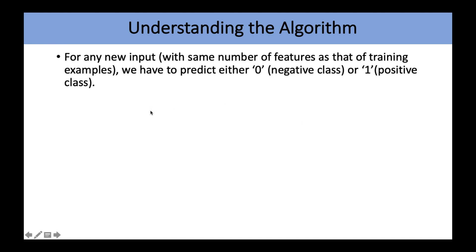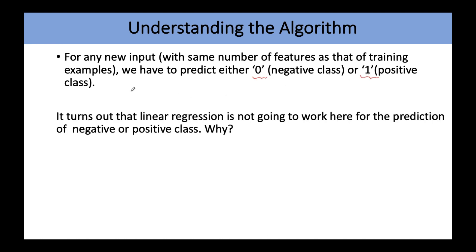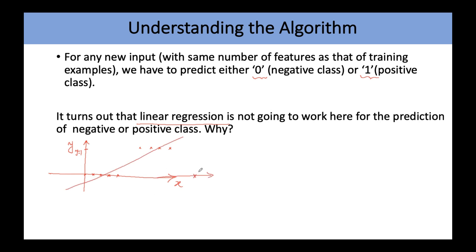Now let's understand this algorithm. For any new input with the same number of features as the training samples, we want to predict either 0 or 1. Linear regression is not going to work here. If x is a single feature and we plot x versus y, y is either 0 or 1. If you fit a straight line, for some new input x the predicted y will be greater than 1 or even negative — less than 0. This is not something we want, so linear regression will not work at all.